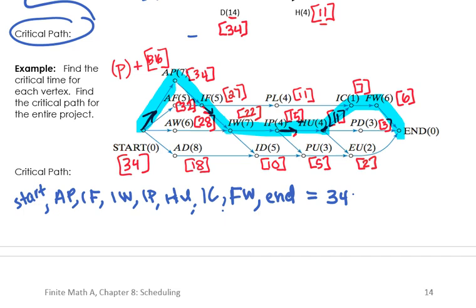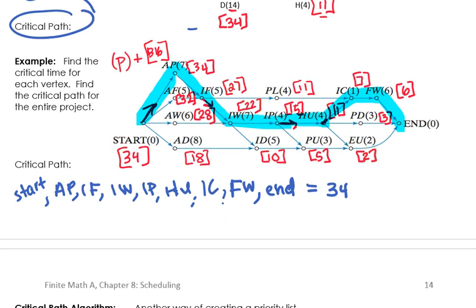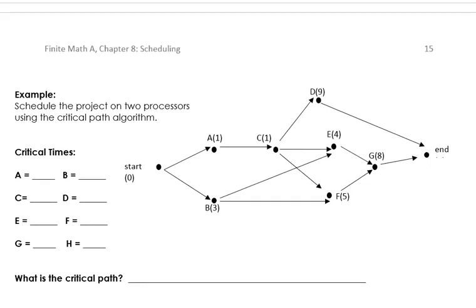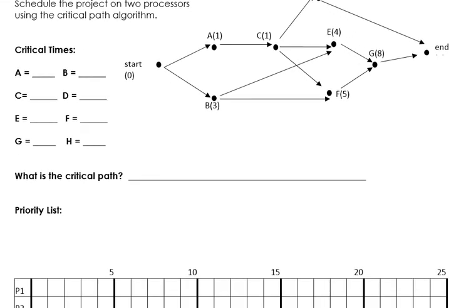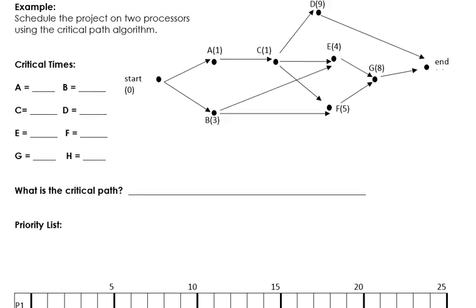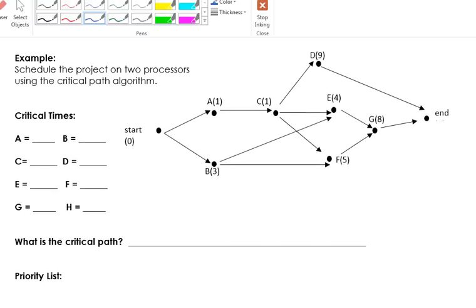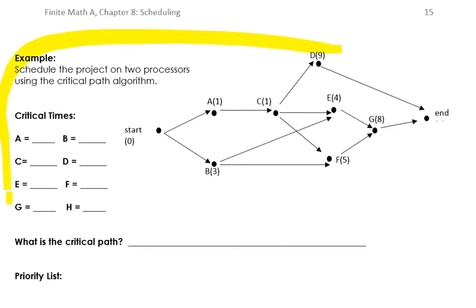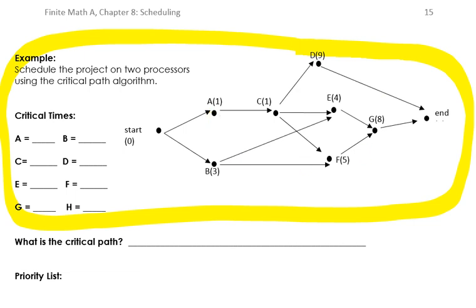For tonight's homework, you're going to get some problems that look like regular scheduling problems with critical times and a schedule underneath. The only thing you have to do on the worksheet tonight is find the critical time from each vertex and write those down — you're not going to do any scheduling today. Tomorrow, we will go over how to make the priority list based on the critical time and we will get our scheduling done.